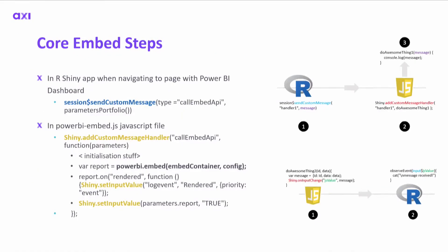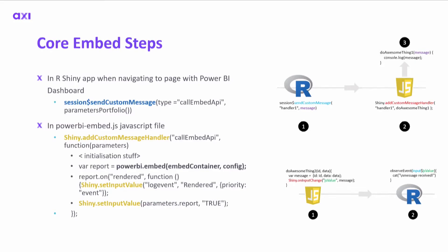A quick example of how we use these functions: when a user navigates in the R Shiny app to a page where a Power BI dashboard should appear, we call sendCustomMessage, which calls the embed API function in JavaScript with parameters for the report. In the PowerBI_embed.js file, addCustomMessageHandler catches the call to embed the API, and using the Power BI JavaScript library we embed the dashboard at a specific container in the Shiny app. When done rendering, the app is notified via setInputValue and Shiny can continue with its next steps.